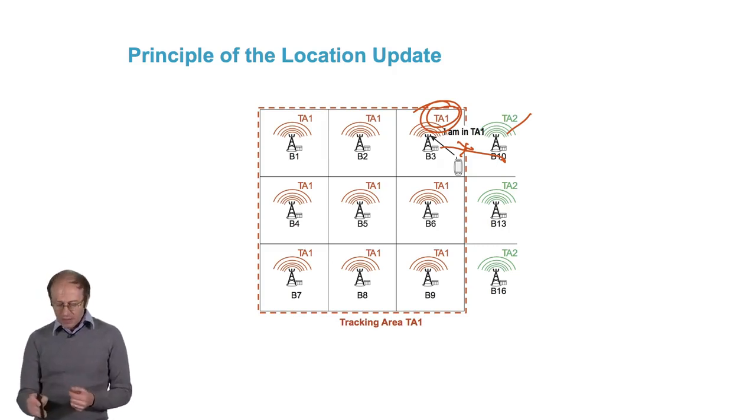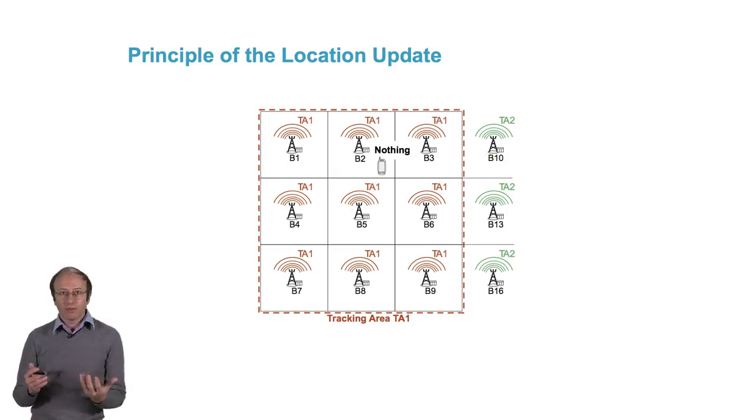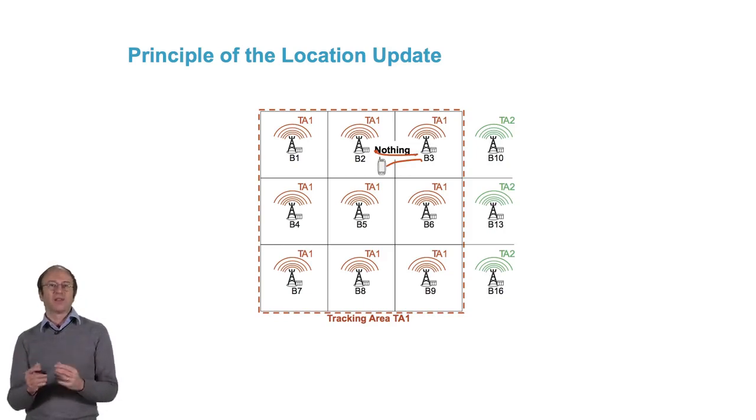It will update its location, saying I'm in TA1 and not I'm in cell X. This means that when the cell phone moves and goes into a different cell, well, it does nothing. It doesn't send a signaling message.